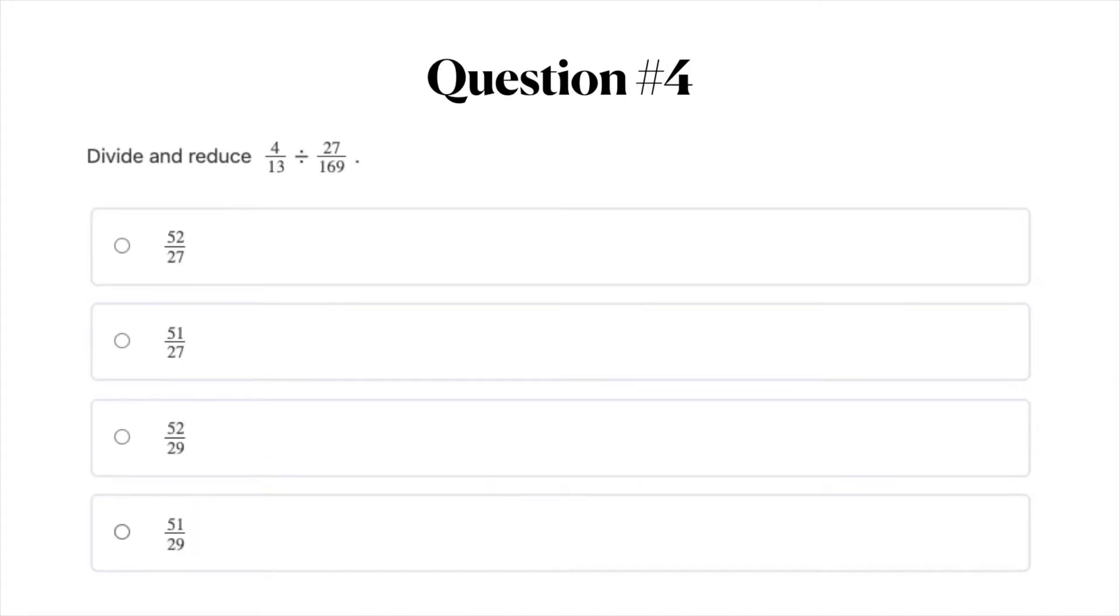Question number four. Divide and reduce 4 over 13 divided by 27 over 169. Your answer options are A, 52 over 27, B, 51 over 27, C, 52 over 29, and D, 51 over 29. Go ahead and pause the video here and when you're ready you can move on to question number five.